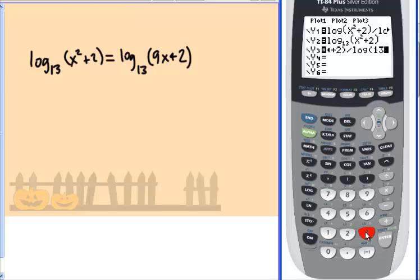If you have an 84, then you would go ahead and hit alpha window. And then go down and choose log base, which is that option number 5, log base. Not absolute value. And then you would put in 13 and then 9x minus 2 or 9x plus 2.